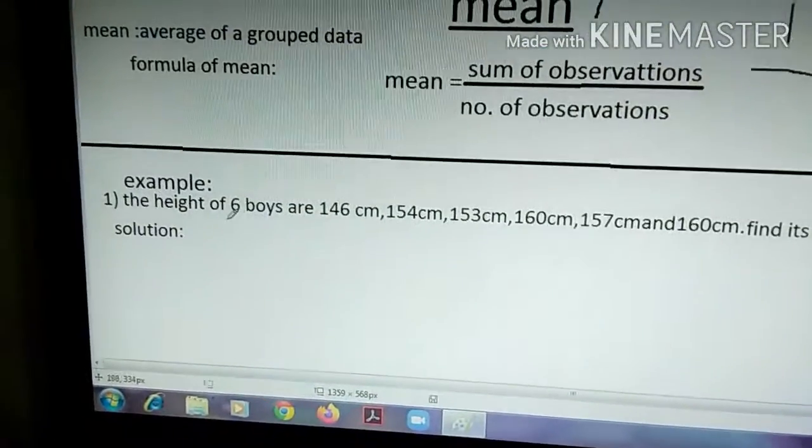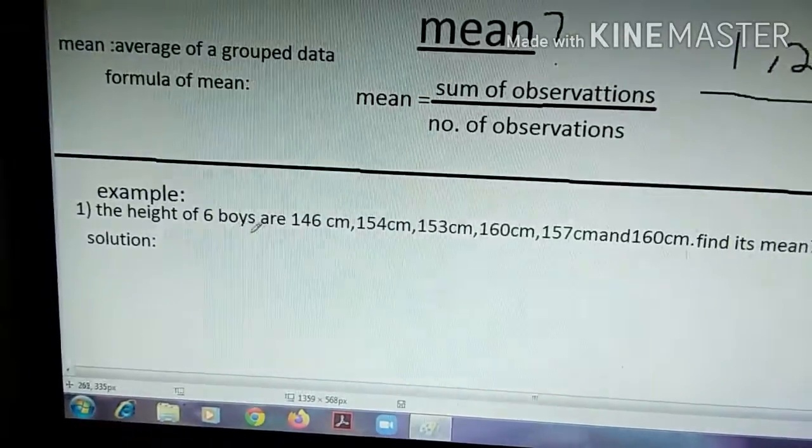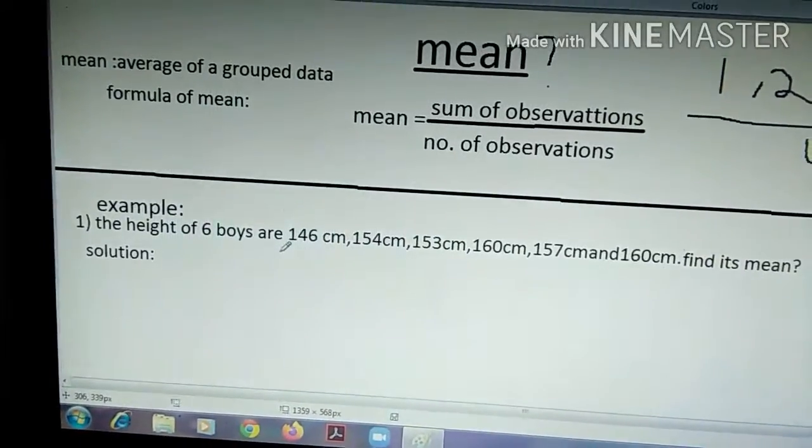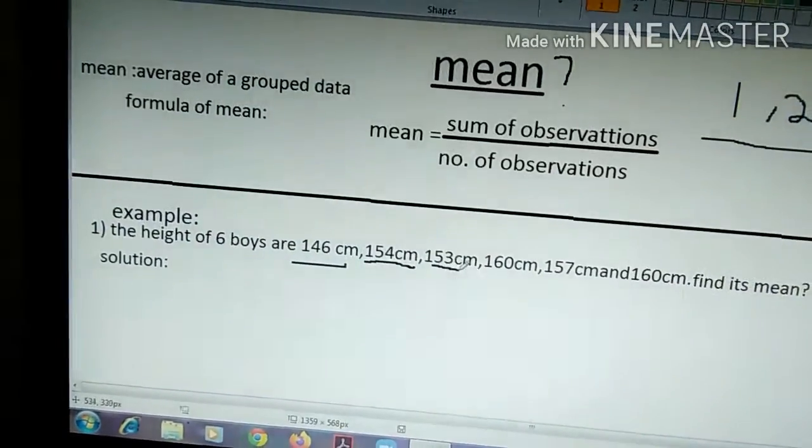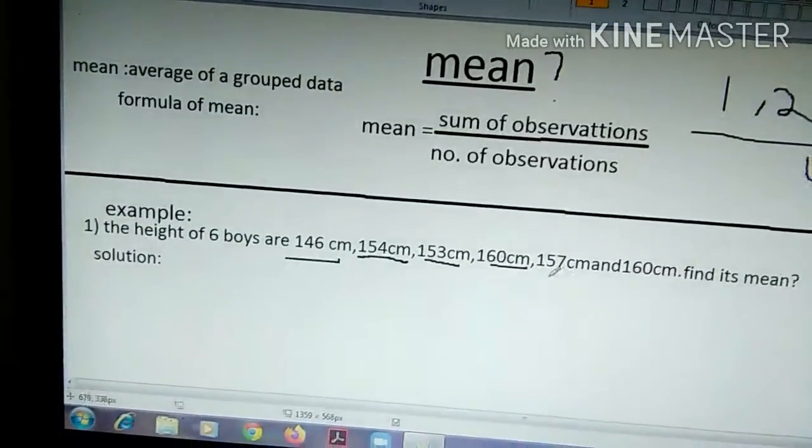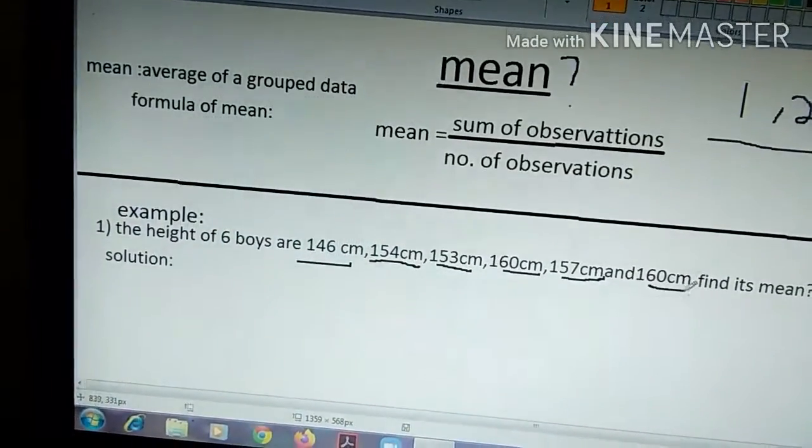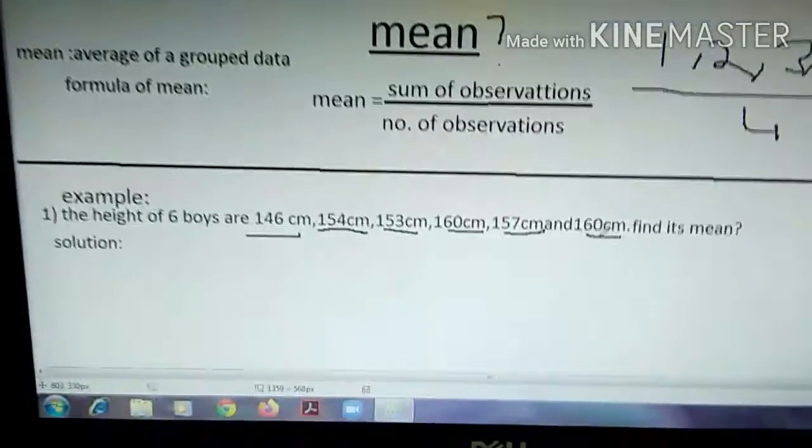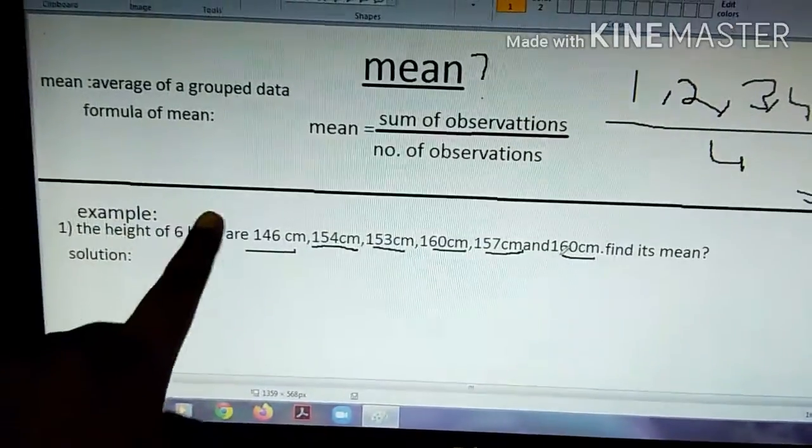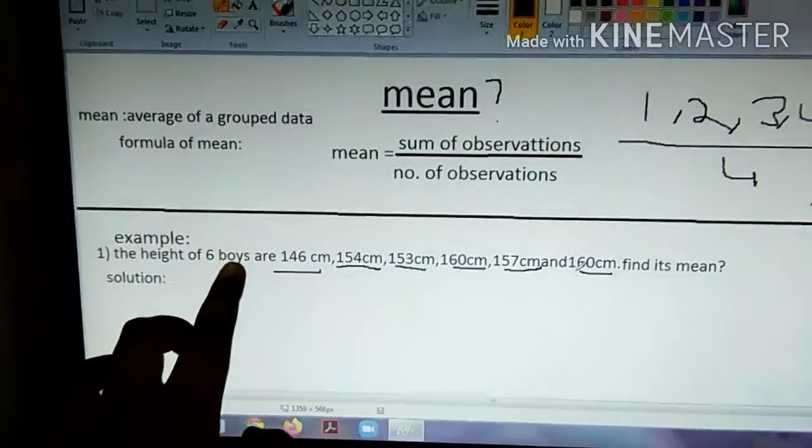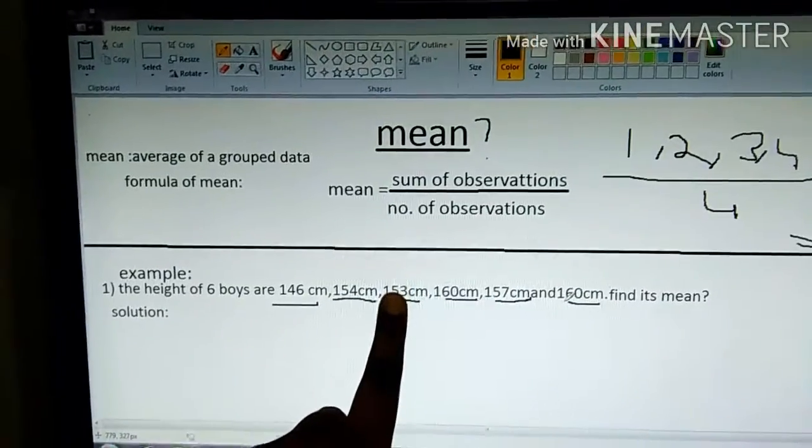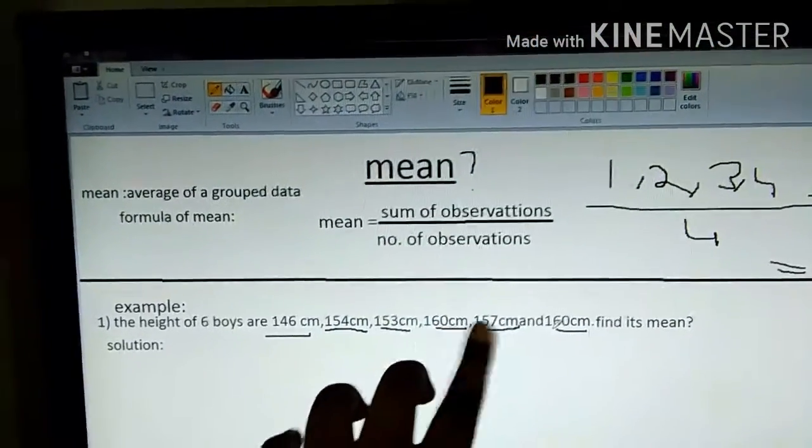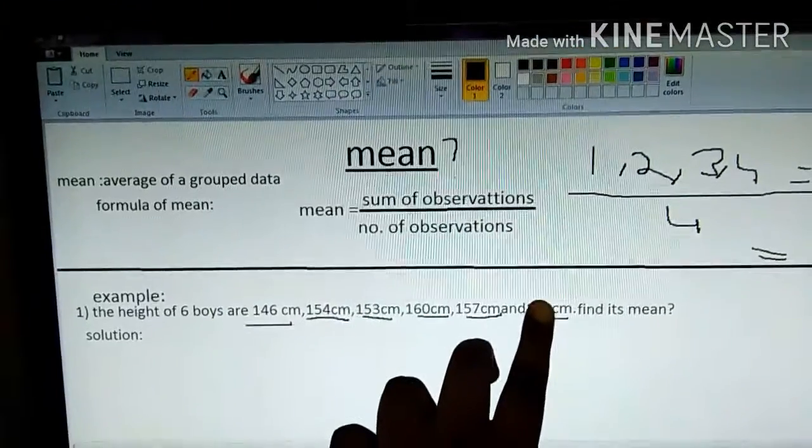Now, let us go to an example. The height of 6 boys are 146 cm, 154 cm, 153 cm, 160 cm, 157 cm, and 160 cm. Find its mean.